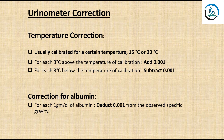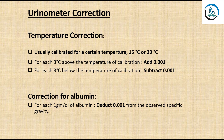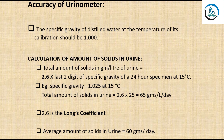Urinometer correction for temperature: the urinometer is calibrated at 15°C or 20°C. For each 3°C above the calibration temperature, add 0.001 to the reading; for each 3°C below, subtract 0.001. For albumin correction: if urine contains more than 1 g/dL of albumin, subtract 0.001 from the observed specific gravity for each 1 g/dL of albumin. To check urinometer accuracy, measure the specific gravity of distilled water at the calibration temperature — it should read 1.000.